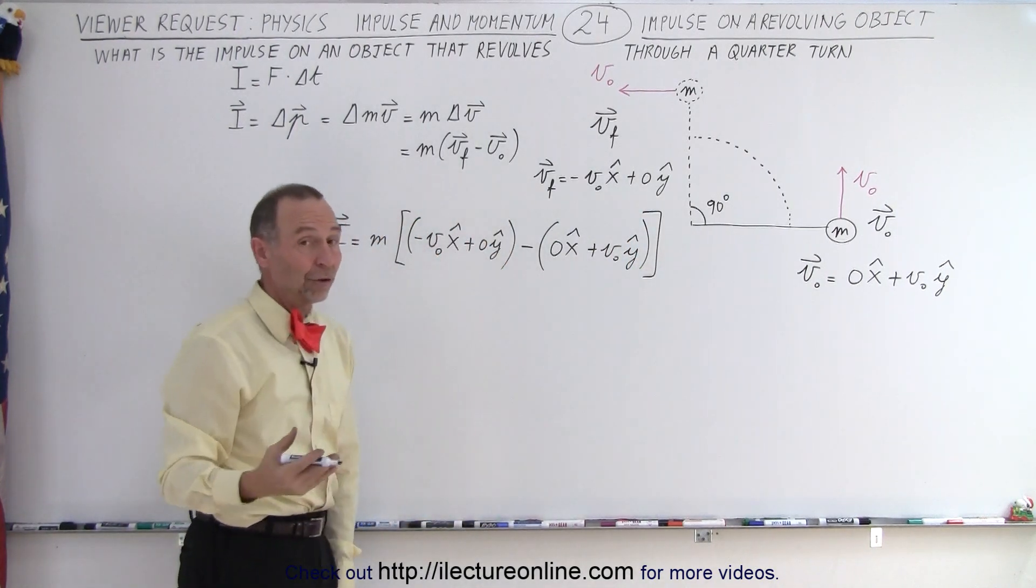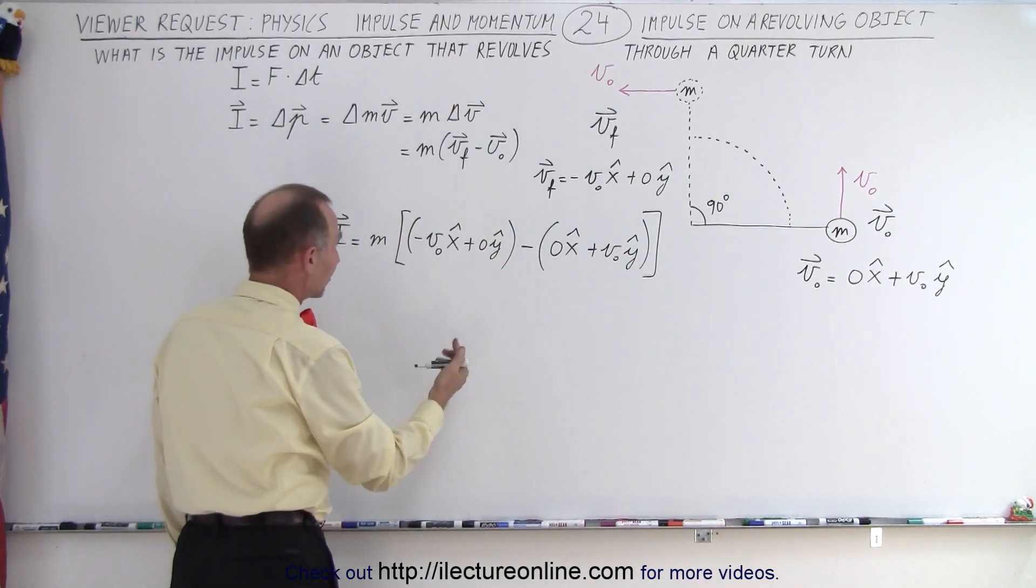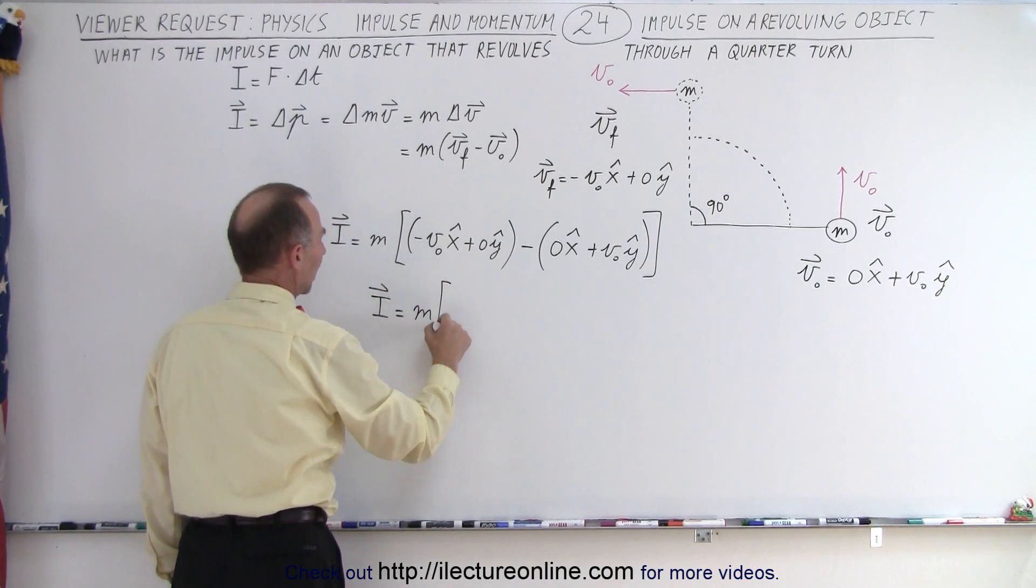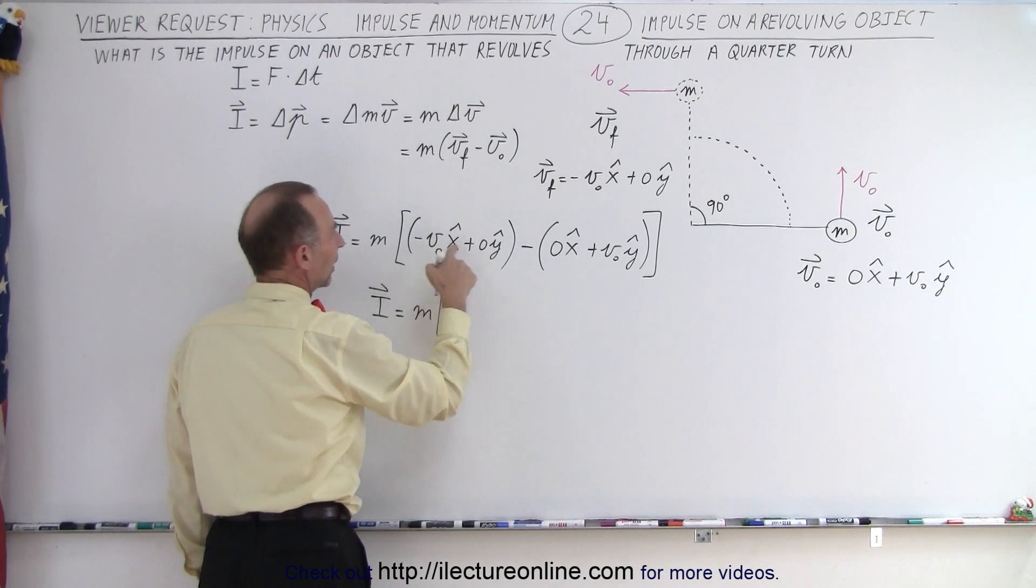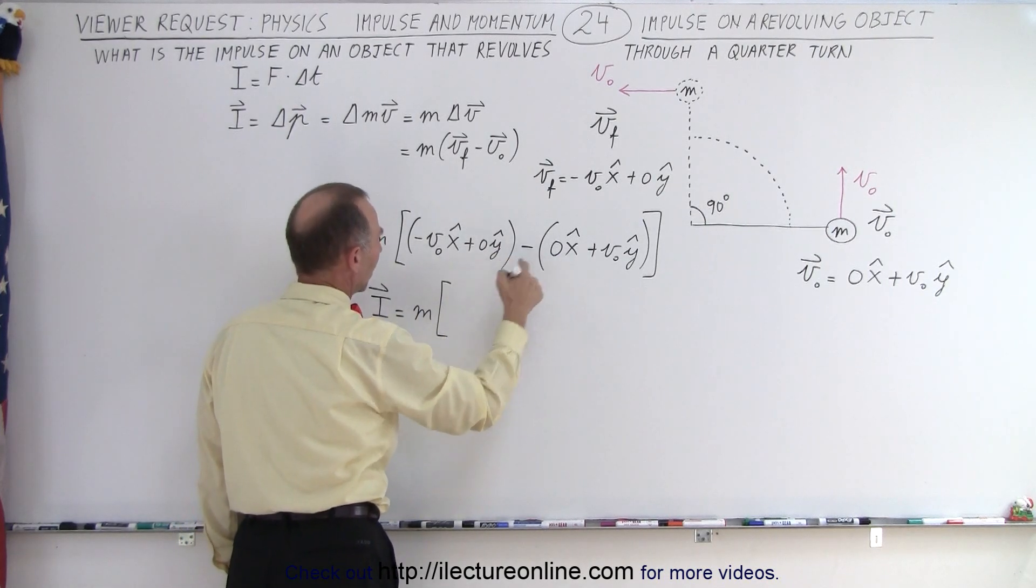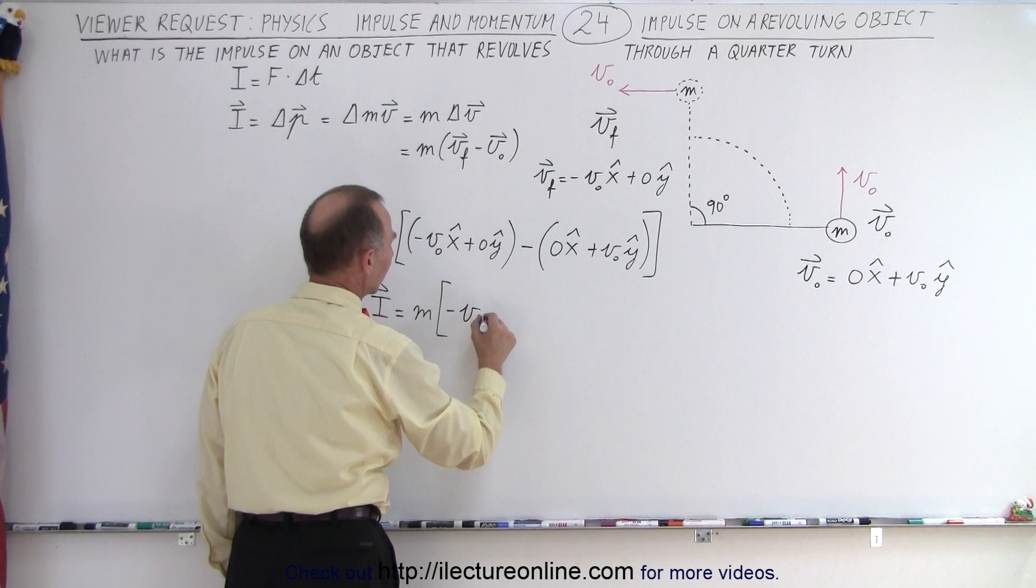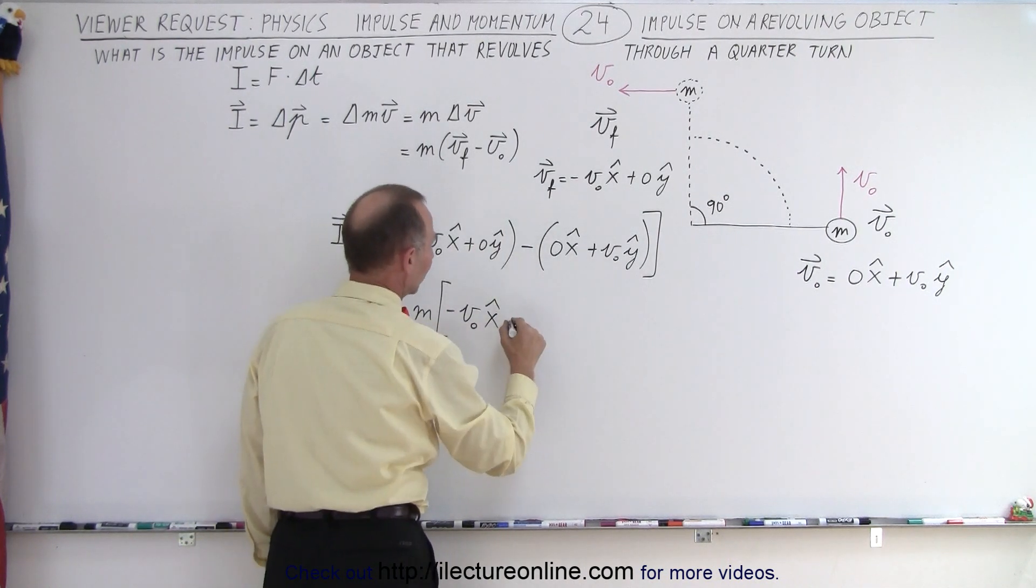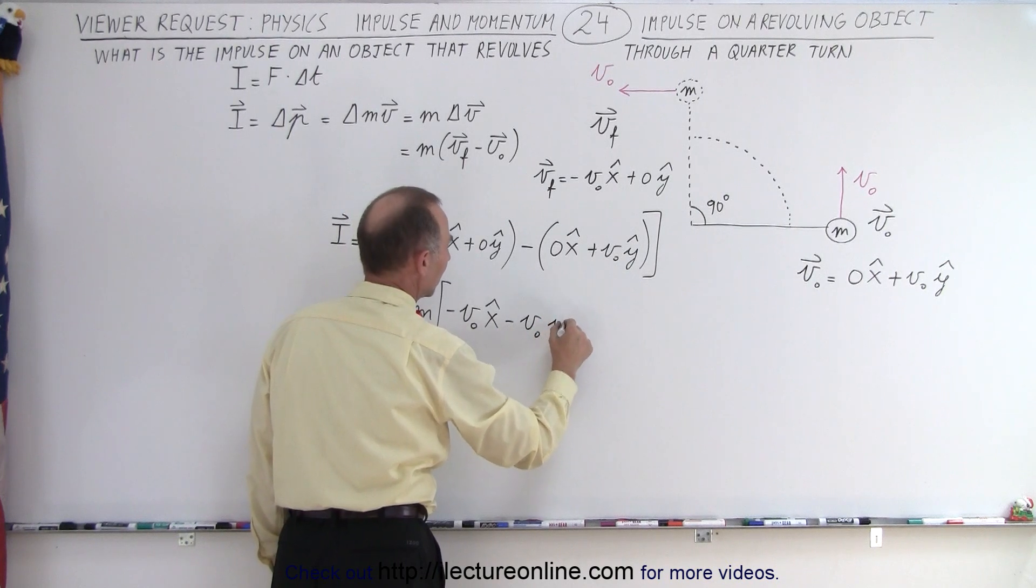And then we simply have to add those vectors together. We add like vectors together, so that means that the impulse is equal to the mass, times minus v sub nought minus 0, so that would be minus v sub nought in the x direction, and 0 minus v sub nought in the y direction is a minus v sub nought in the y direction.